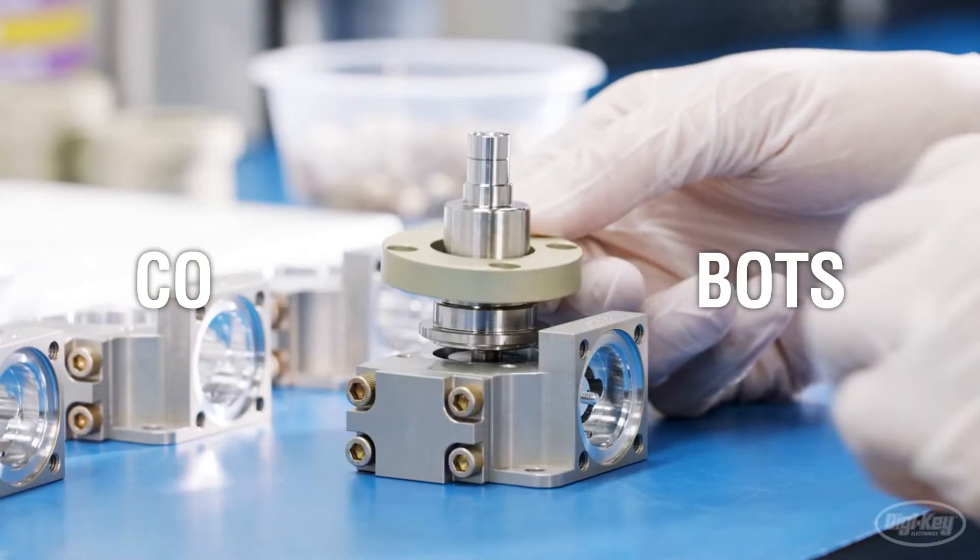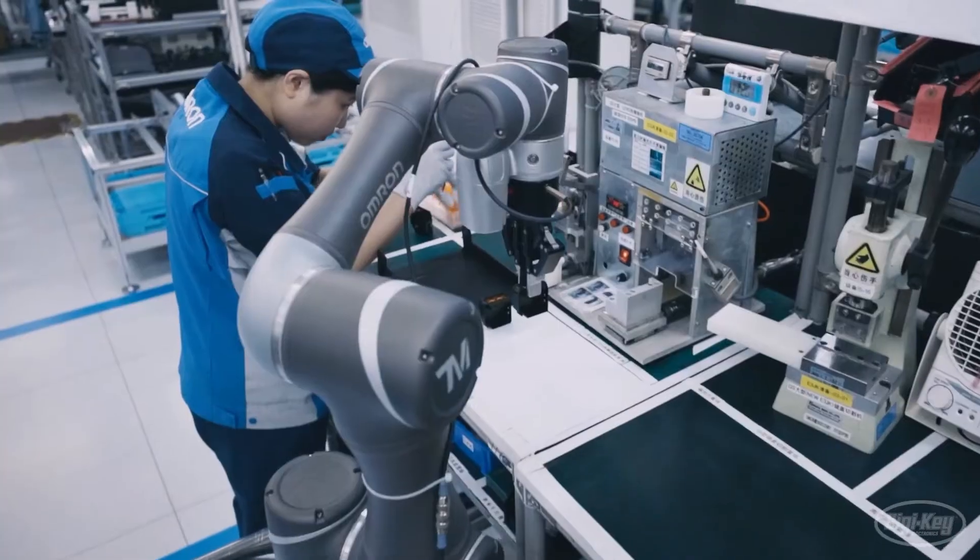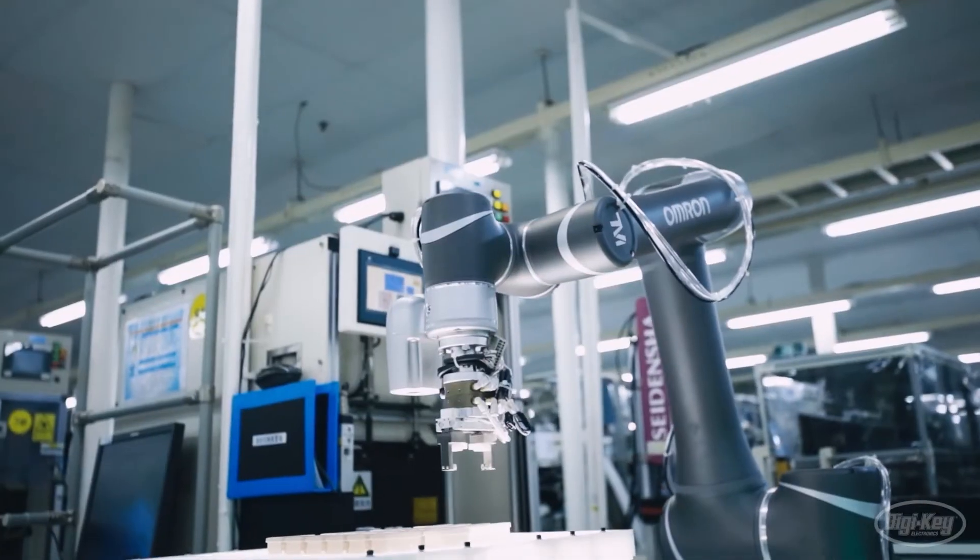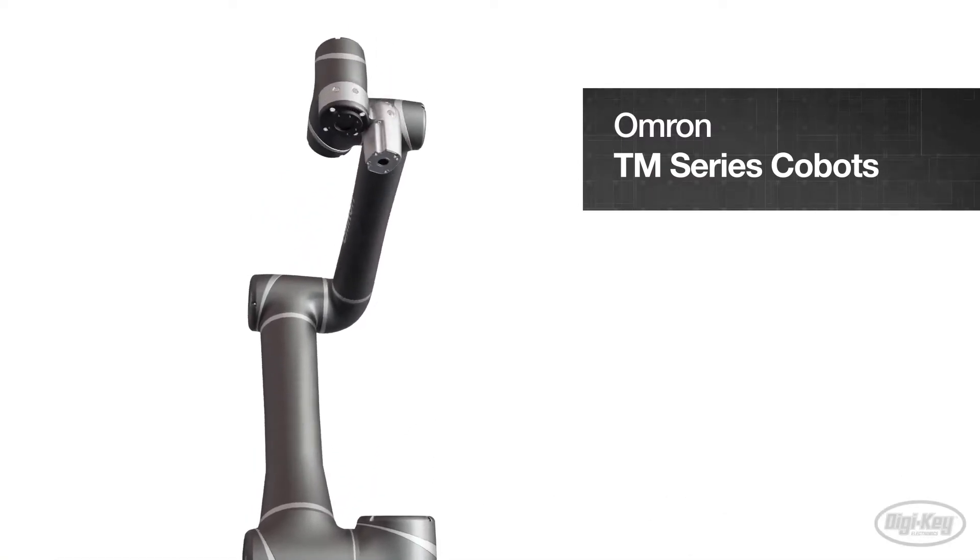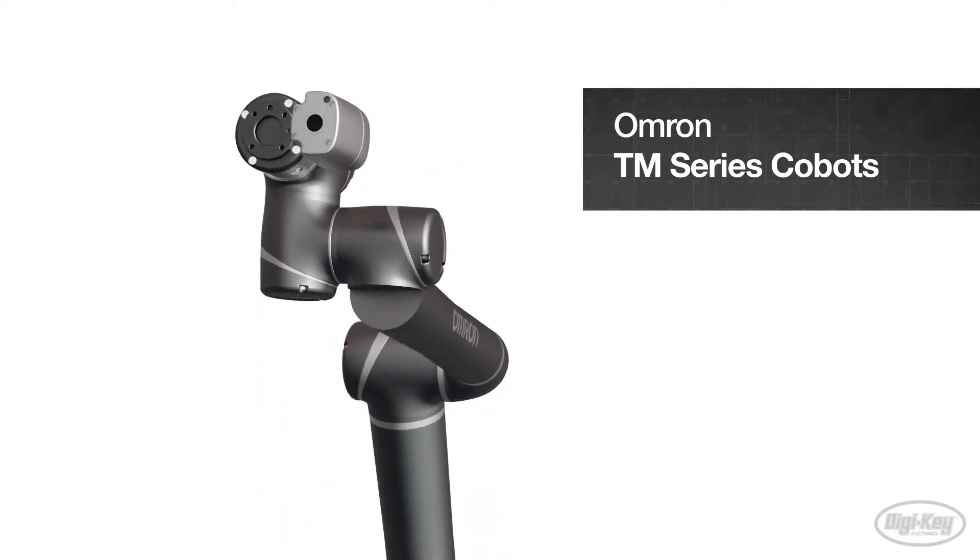Collaborative robots, or co-bots, are designed to work with humans and other machines, combining people's creative problem-solving capability. Omron's TM series of co-bots makes automating these processes easy.